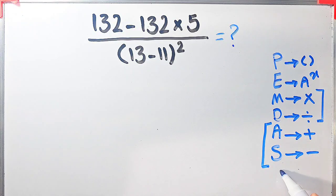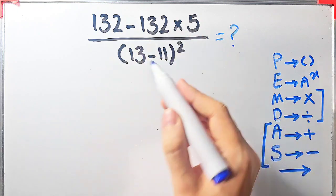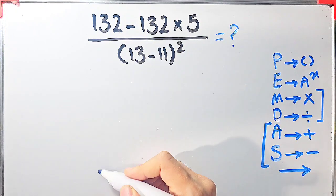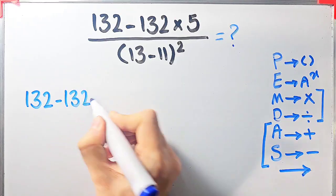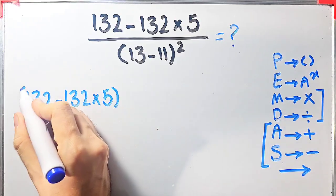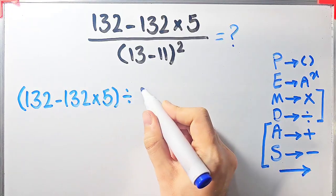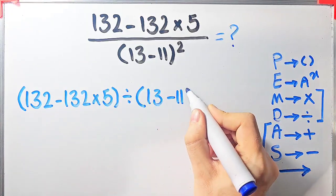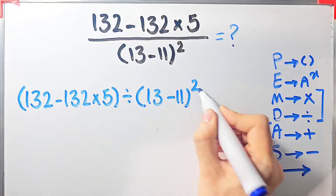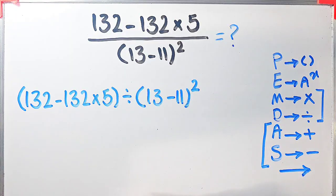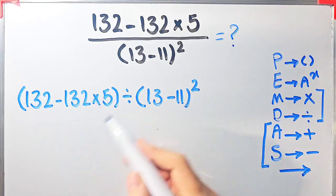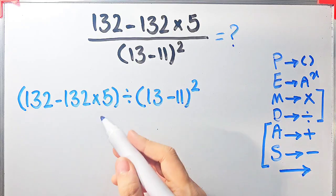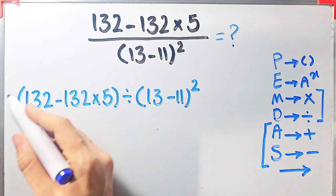When we have both in an expression, we start from the left and simplify. Let's simplify and solve this question step by step. We have 132 minus 132 times 5 then divided by open parentheses 13 minus 11 closed parentheses then all of them to the power of 2. In this question we have parentheses, subtraction, multiplication, division, and exponent. According to the PEMDAS rule, first we simplify the parentheses. Inside these parentheses we have subtraction and multiplication.